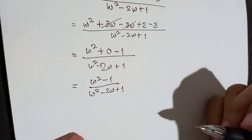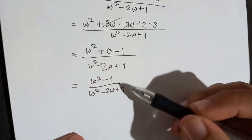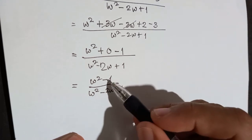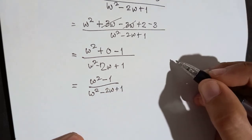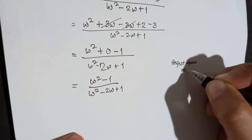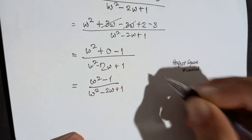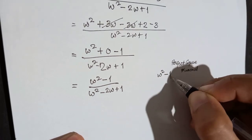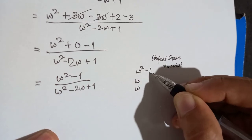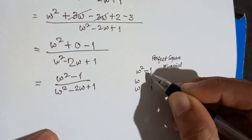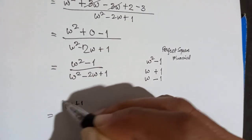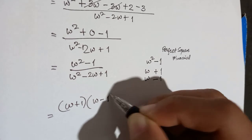This is not yet the answer — we need to factor numerator and denominator. The numerator w squared minus 1 is a perfect square binomial — a difference of squares. Factor: w times w gives w squared; 1 times 1 gives 1. Since it is negative, one is positive and the other negative. So the numerator factors as (w plus 1)(w minus 1).